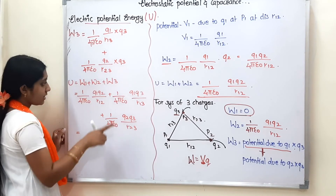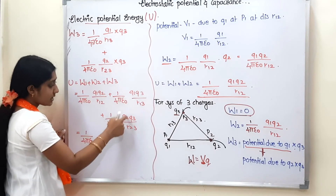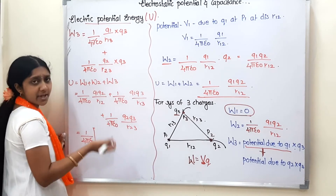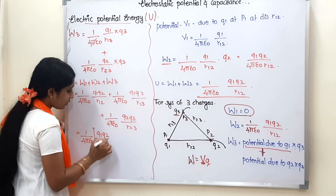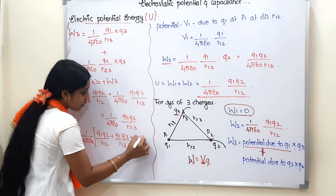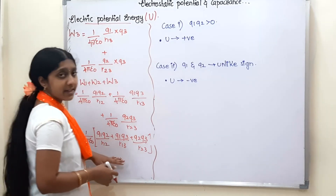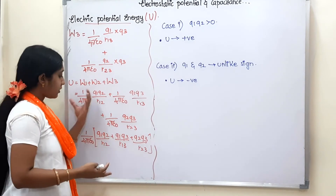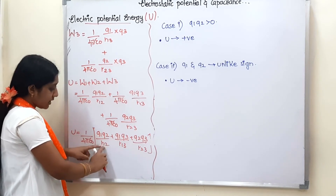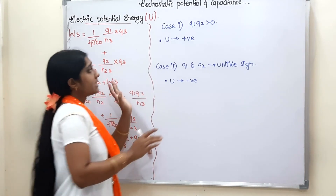Now the total potential energy U equals W1 plus W2 plus W3. W1 equals zero. W2 equals 1/(4πε₀) · Q1·Q2/R12. Adding W3, we take 1/(4πε₀) as the common factor. The final formula for potential energy of a system of three charges is U = 1/(4πε₀) · (Q1·Q2/R12 + Q1·Q3/R13 + Q2·Q3/R23).